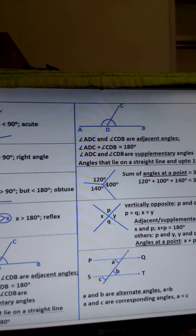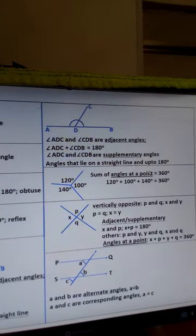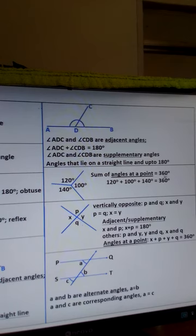Next, about angles at a point. You can see these angles: 120 degrees, 100 degrees, and 140 degrees. These three angles are angles at a point, and the sum of the angles at a point is 360 degrees. So 120 plus 100 plus 140 gives you 360 degrees.